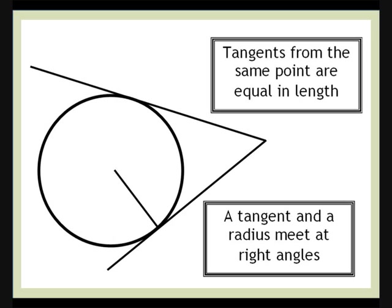From any point outside the circle, you can always draw two tangents to the circle, and the distance from the point to the circle will be the same for both of them. Also, a tangent and a radius are perpendicular, i.e., they meet at right angles.